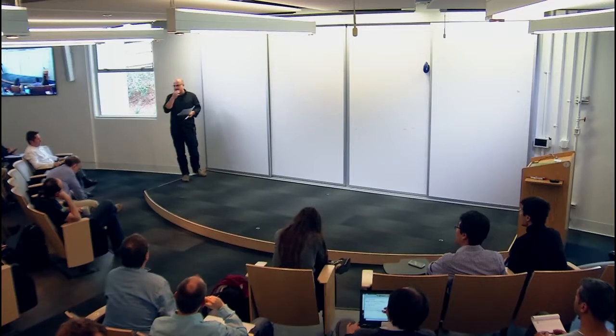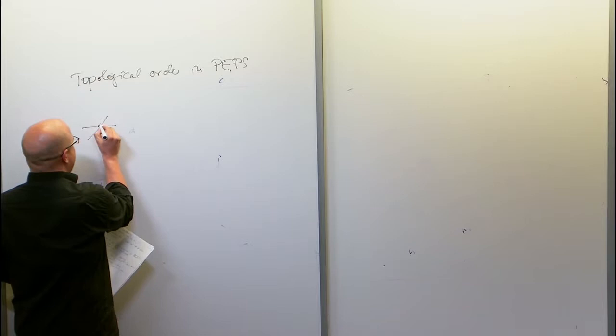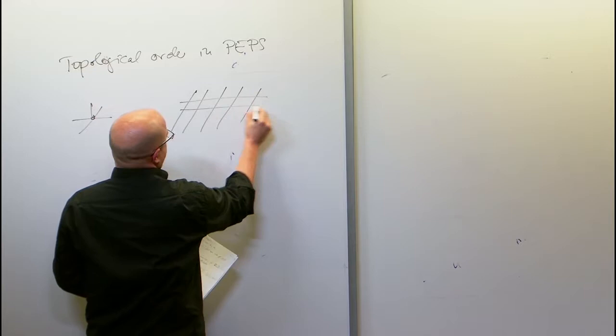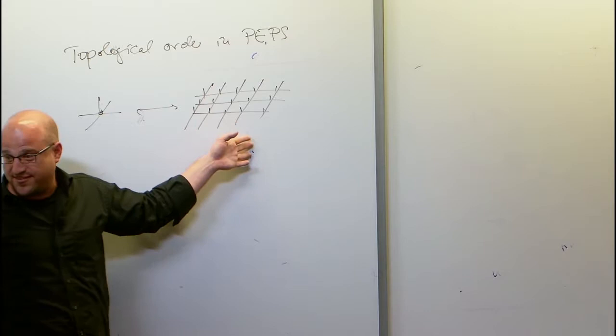The basic question is: given a local tensor out of which we build a tensor network state, how are the properties of the global state related to the local tensor? What does a local tensor tell us about the global state? That would be the general theme of the talk.